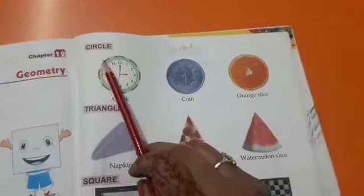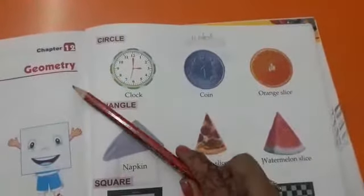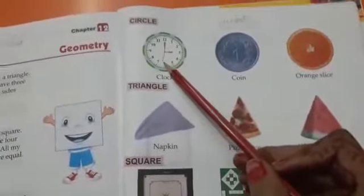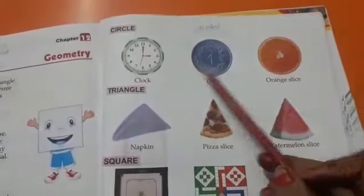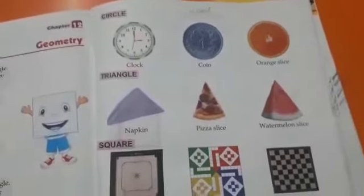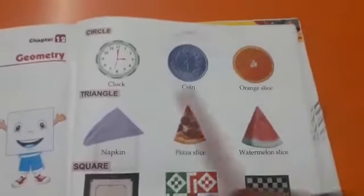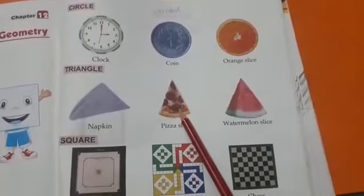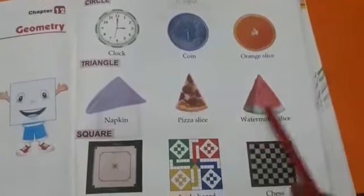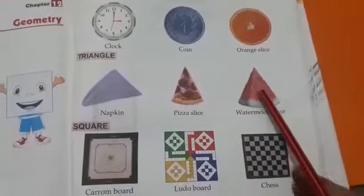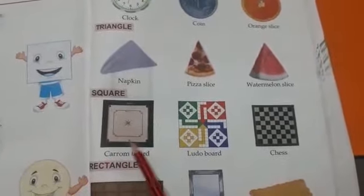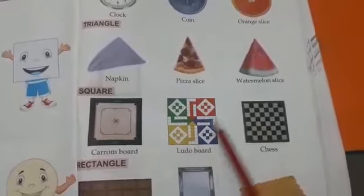Now, circle related to our things we have seen like clock, coin, orange slice. This is circle shape. Triangle shape: napkin, pizza slice, watermelon slice. This is the shape of a triangle. Square: carom board, ludo board, chess. This is the shape of square.